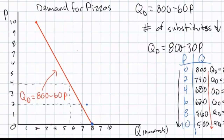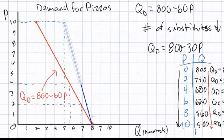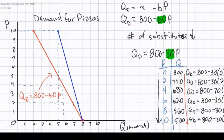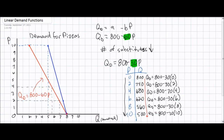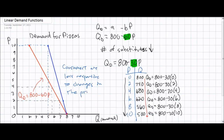We'll plot a couple of points and show our new demand curve following the decrease in the elasticity of demand. Notice that at $10, now 500 pizzas are demanded, whereas before only 200 pizzas were demanded. The new demand curve is steeper, indicating an increased inelasticity of demand for pizzas. Due to the fewer number of substitutes, people are less responsive to the higher prices of pizzas. Before, consumers bought 60 fewer pizzas for every $1 increase in price; now consumers will only buy 30 fewer pizzas for every $1 increase. The B variable is an indicator of the responsiveness of consumers to price changes — if it declines, consumers are less responsive.